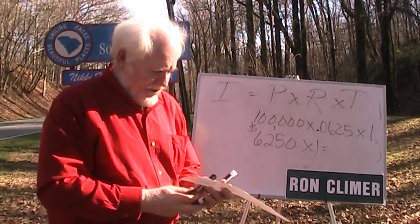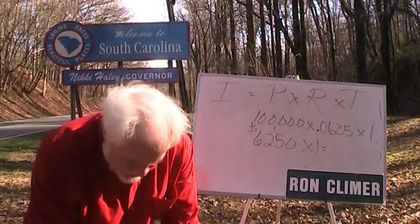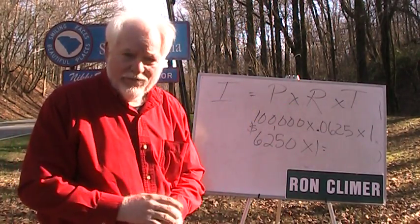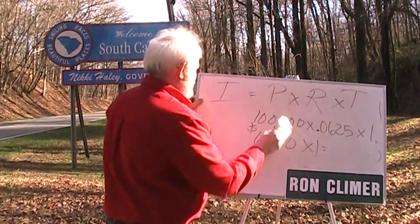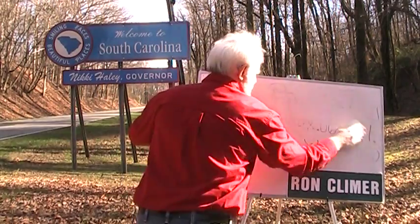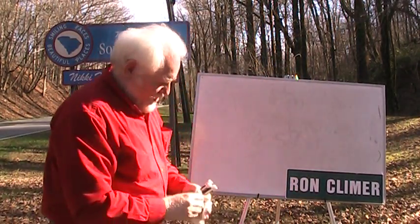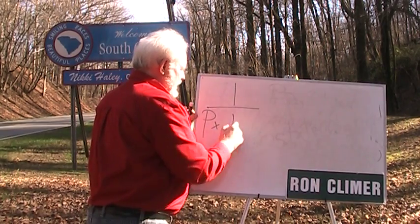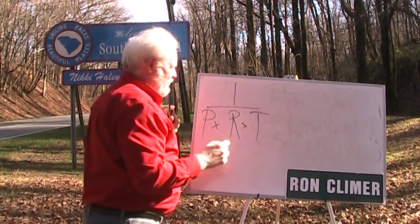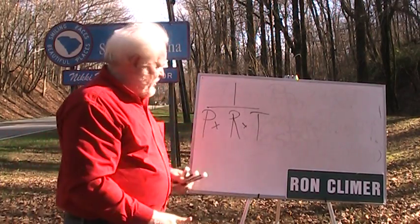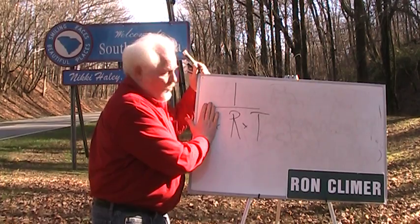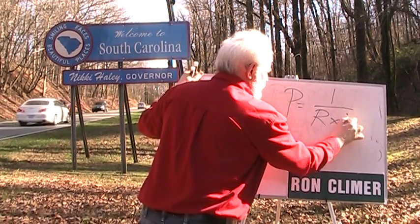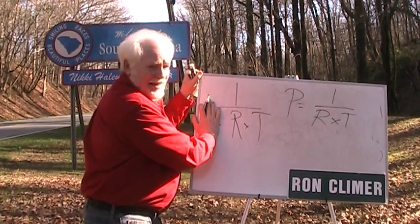Oftentimes on tests they will ask you to take any one of these factors and determine another one. I'm going to give you a little memory peg: think of I — Interest — over P, R, T. Anytime you want to remember the formula for any one of these, you simply cover up the one you're looking for. So if you want to know the formula for Principal, cover up the P — there's the formula: I over R times T.